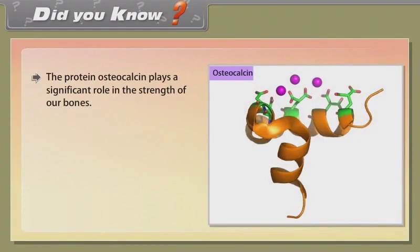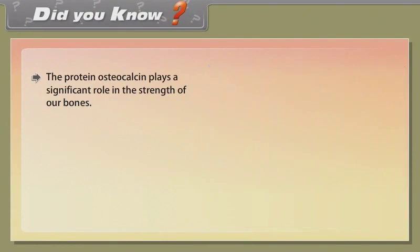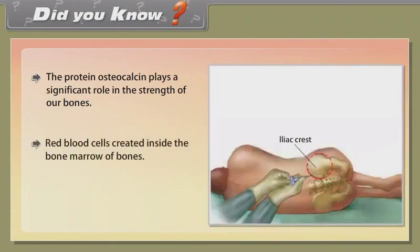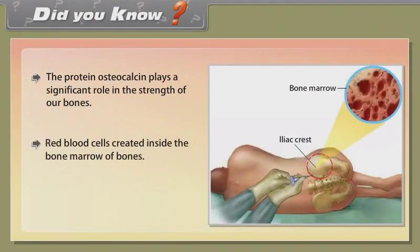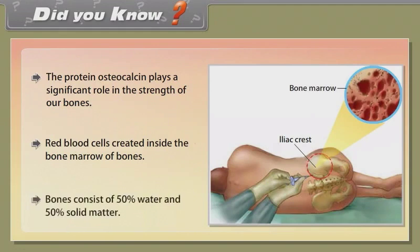Did you know? The protein osteocalcin plays a significant role in the strength of our bones. Red blood cells are created inside the bone marrow of bones. Bones consist of 50% water and 50% solid matter.